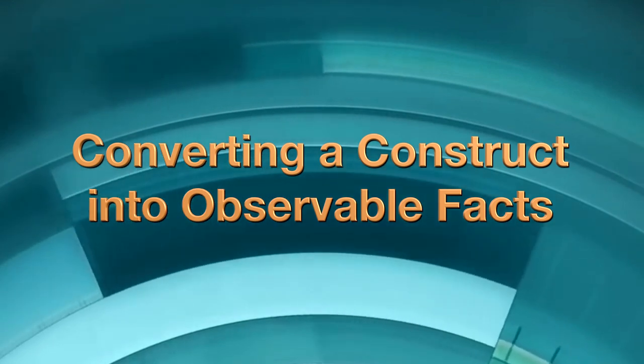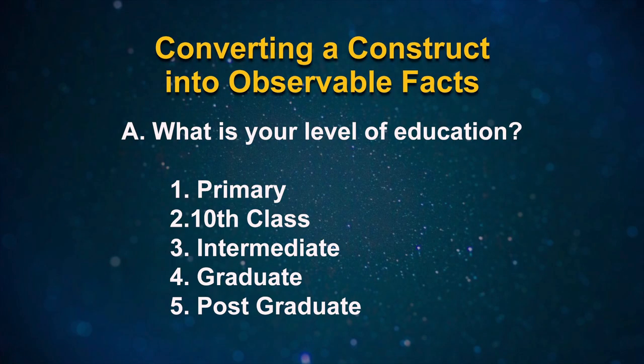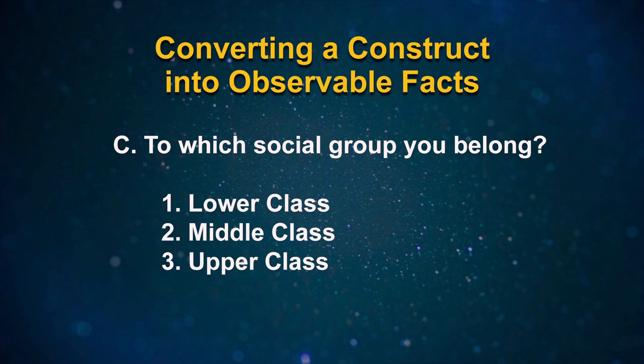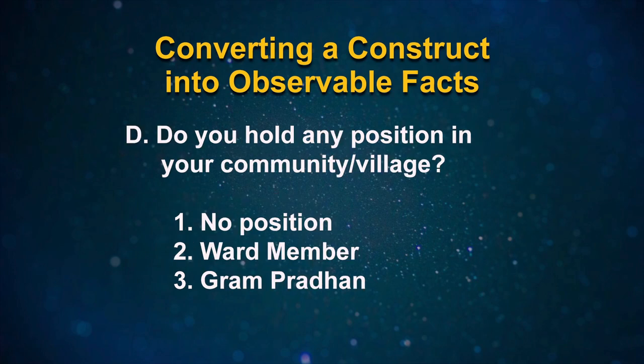Converting a construct into observable facts: pursuing the definition of socio-economic status, we might decide to ask the following questions. First, what is your level of education? Options: one — primary, two — tenth class, three — intermediate, four — graduate, five — post graduate. Next, what was your total family income during last year, in rupees? Third, to which social group do you belong? Lower class, middle class, or upper class? Then, do you hold any position in your community or village? Options: no position, ward member, or gram pradhan.